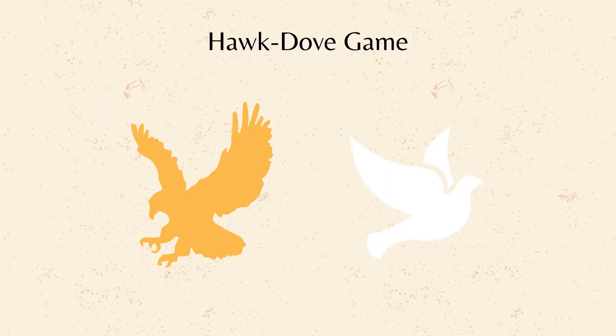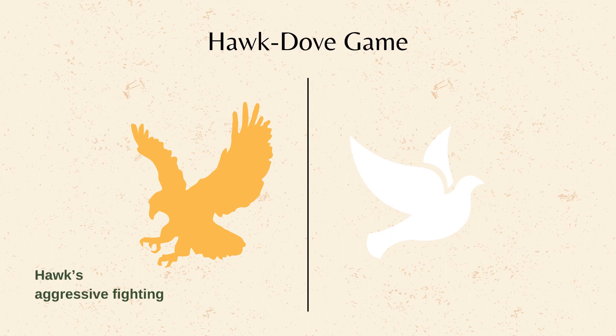Let's take a look at an example. The Hawk-Dove Game is a fundamental model in Evolutionary Game Theory, used to understand how competition and cooperation can co-exist within a population. Imagine two animals competing for a resource, like food or territory. Each has two strategies. First is Hawk — this strategy involves aggressive fighting to win the resource. A Hawk wins against a Dove, but might get injured fighting another Hawk.